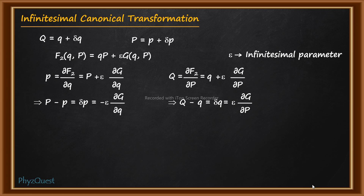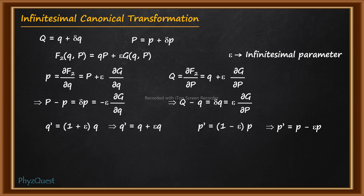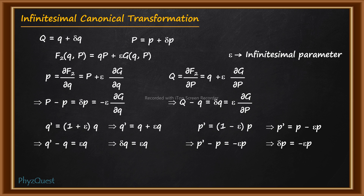Coming back to the question: q prime = (1 + ε)q = q + εq, and p prime = (1 − ε)p = p − εp. From these, q prime − q = δq = εq, and p prime − p = δp = −εp. So we have obtained δq = εq and δp = −εp from the given transformation.